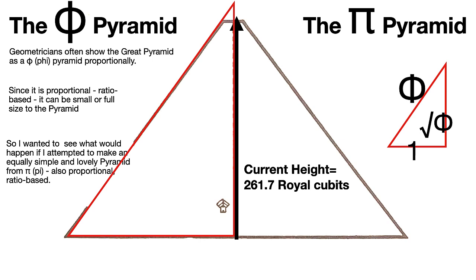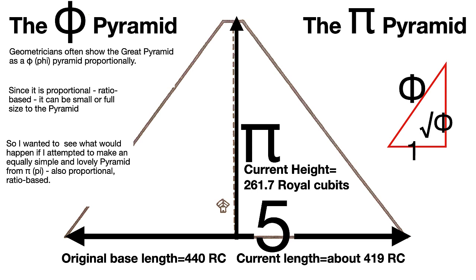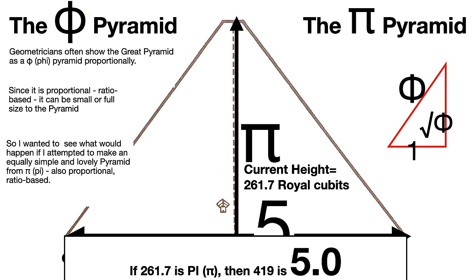The current height of the Great Pyramid is 261.7 royal cubits. I'm going to use that for the height, and I'll call that Pi. So I'll start out by having a clean Greek constant here. Instead of Phi, I'm using Pi because that's what I'm looking to do to see if there is a clean Pi pyramid here. The original base of the Great Pyramid is 440 royal cubits, but since I'm working with what's actually there, and I'm doing this because the results led me to, that's why I'm using what's there now instead of the original. So the current length is not 440 royal cubits, it's 419 royal cubits.